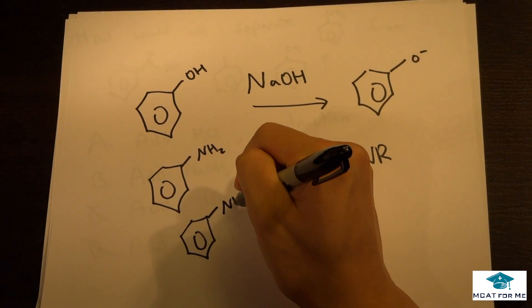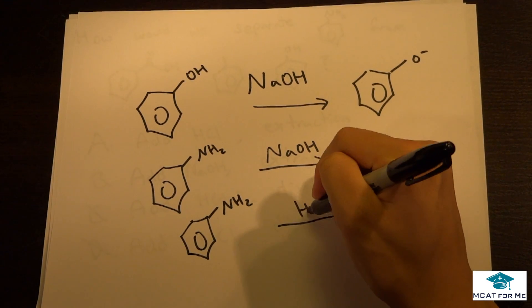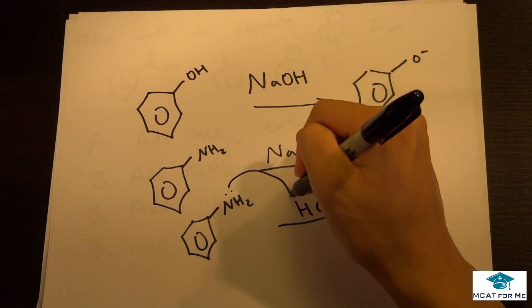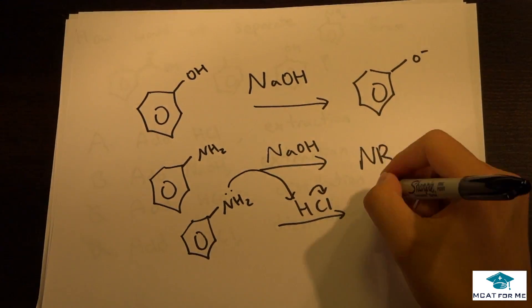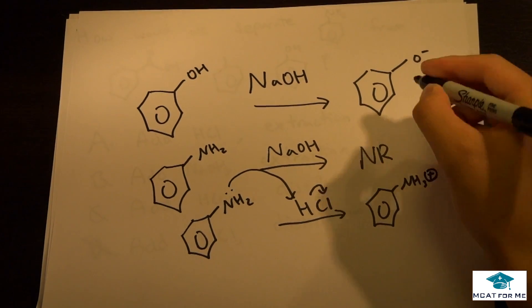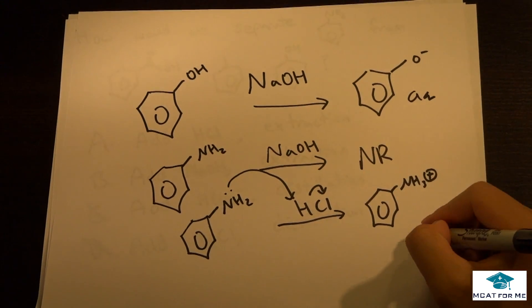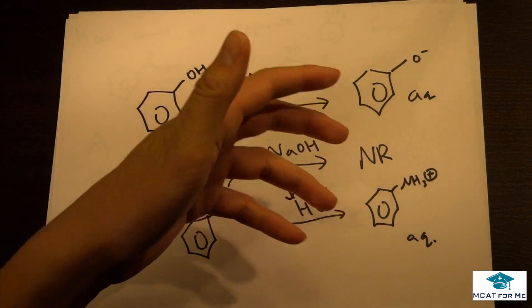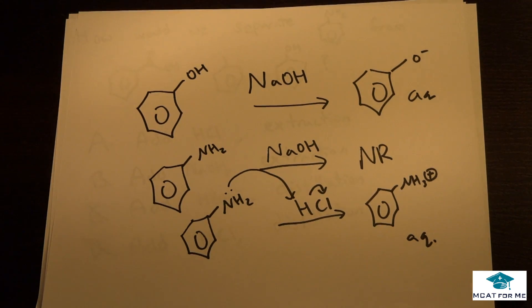But what if we had HCl, we could easily see a protonation happening to make NH3+. And we see these would both be in the aqueous layer. And the question asked us, how do we separate aniline from the rest?